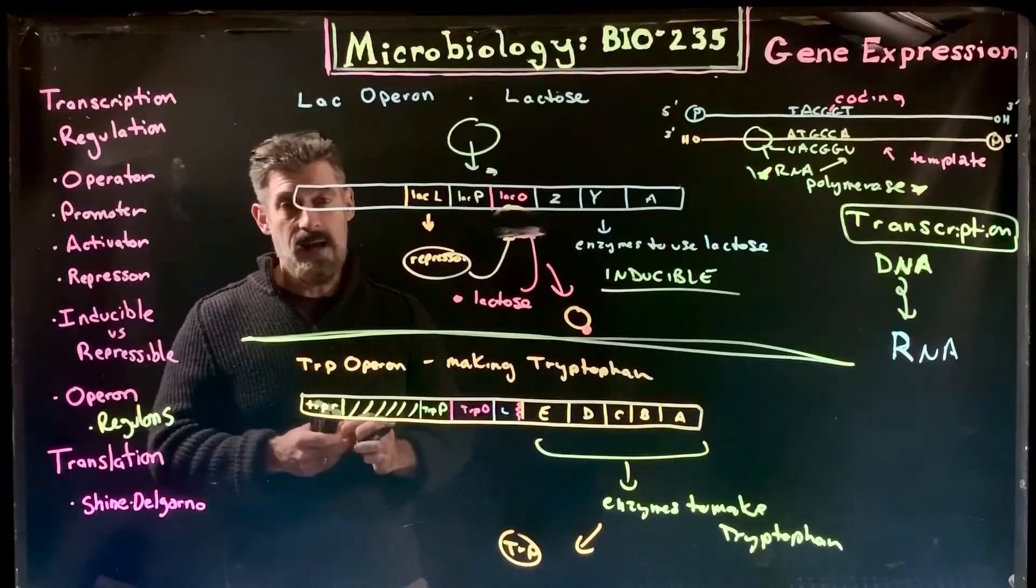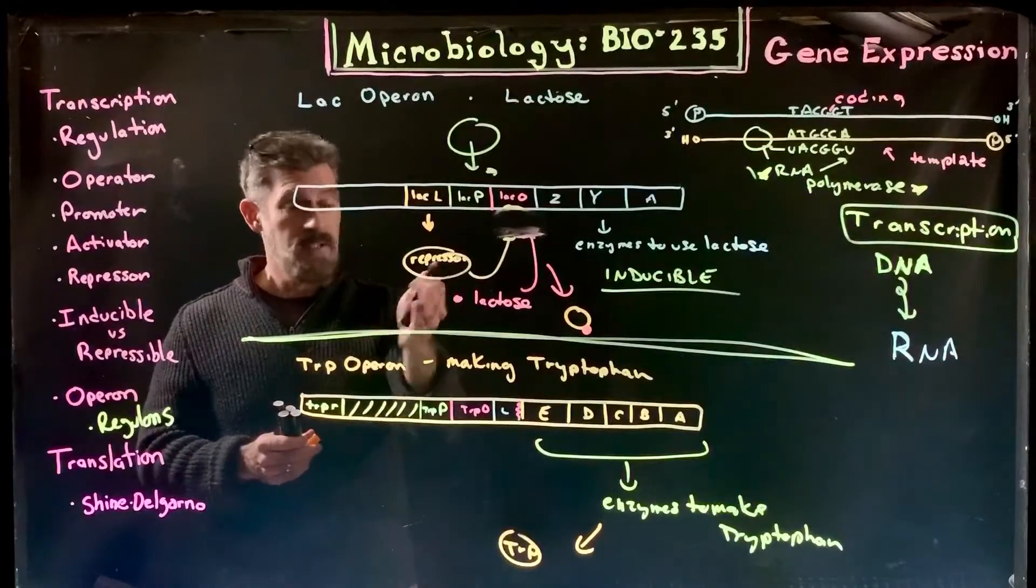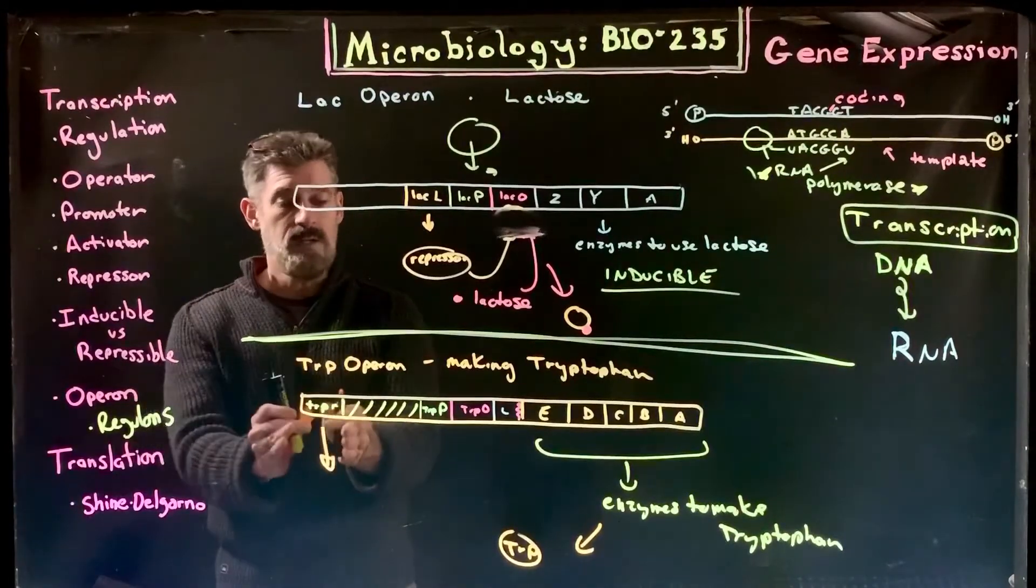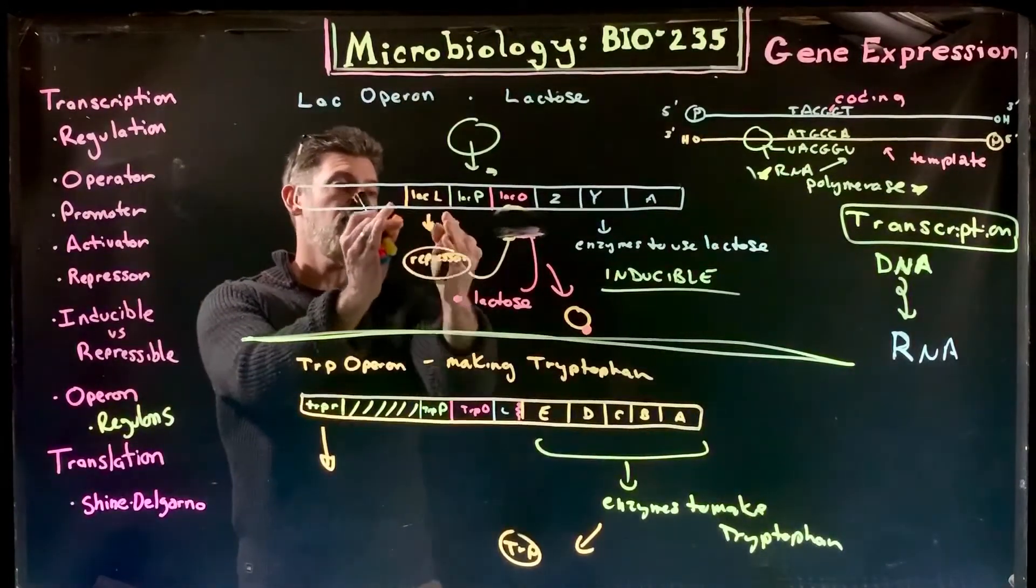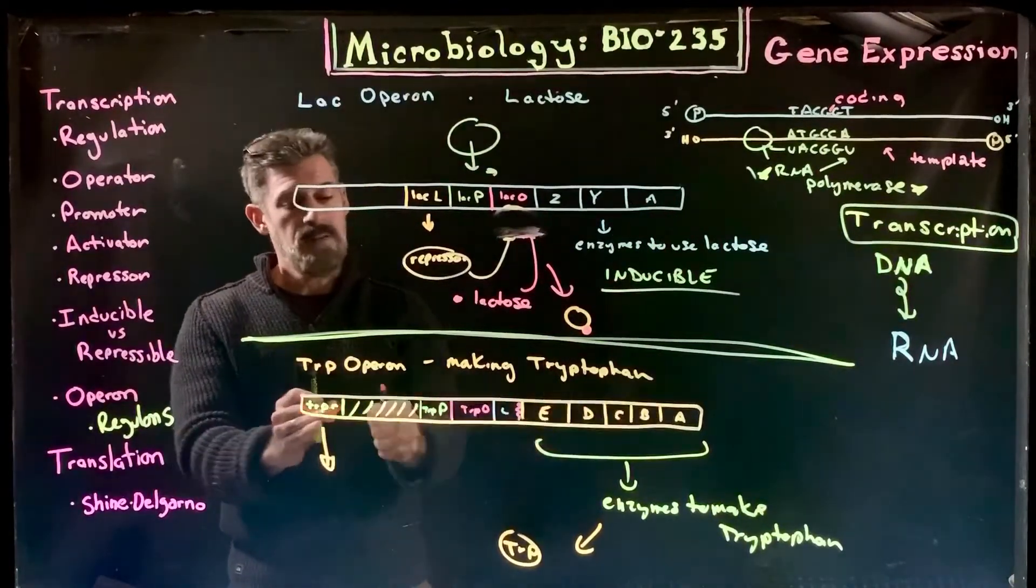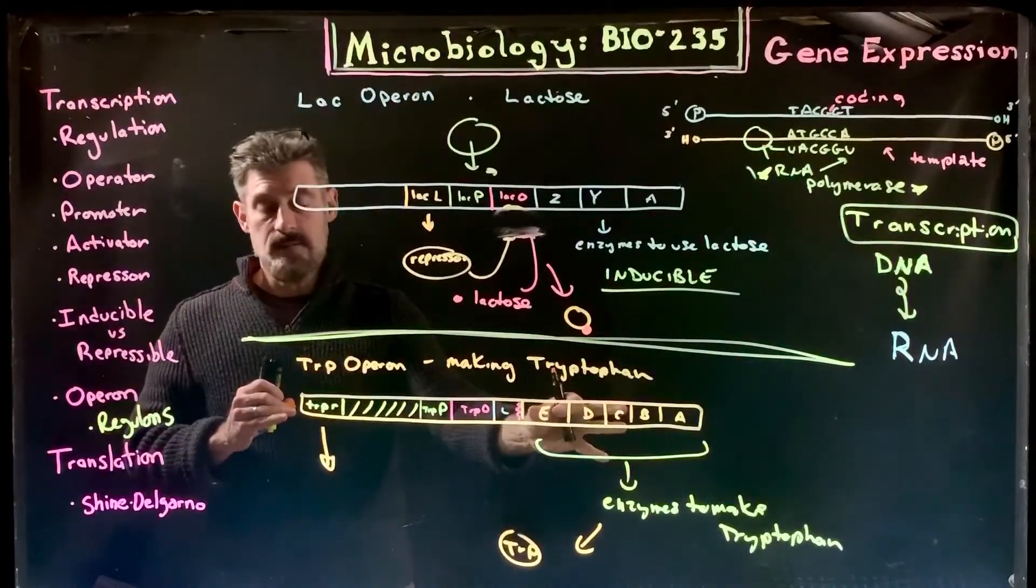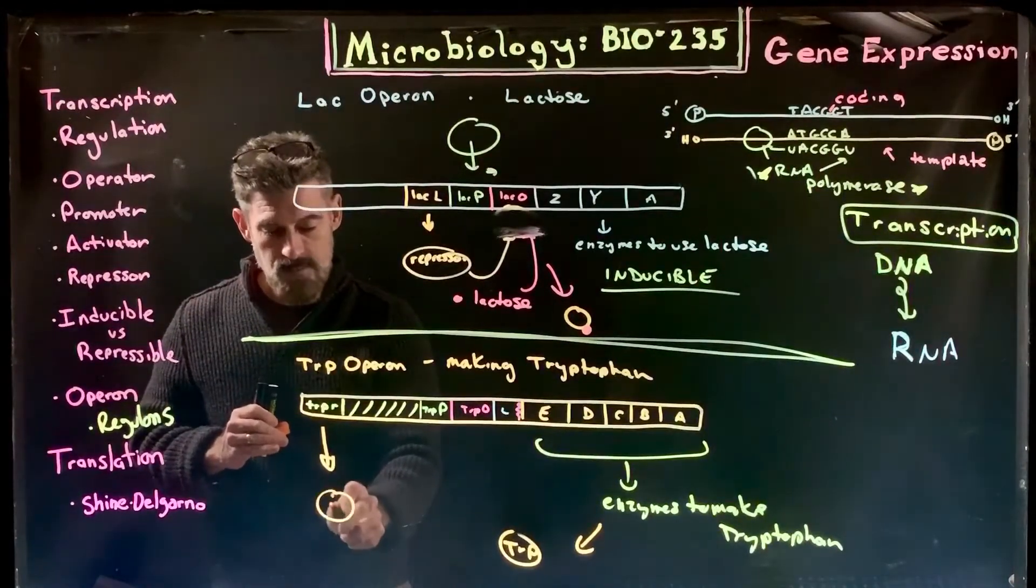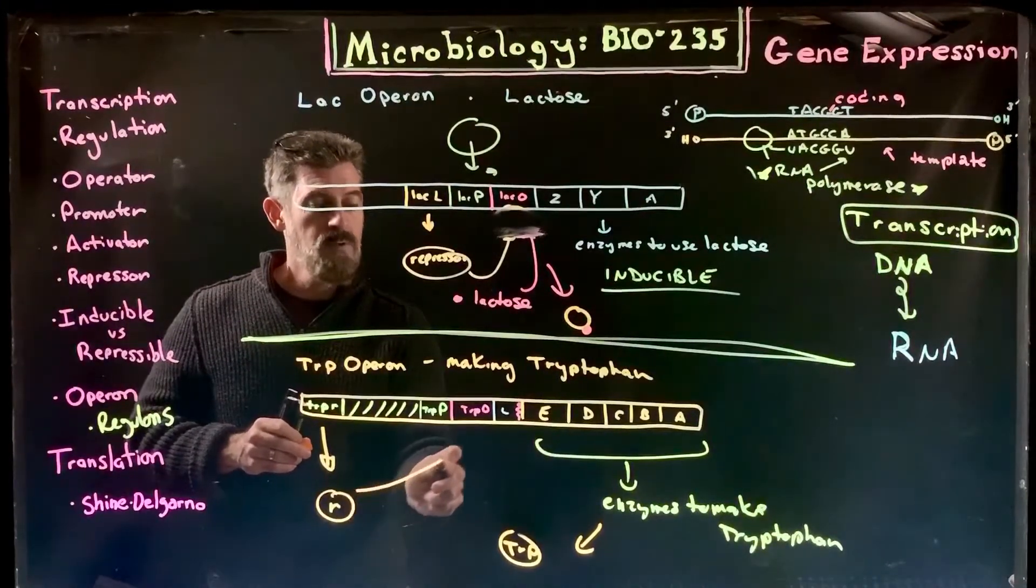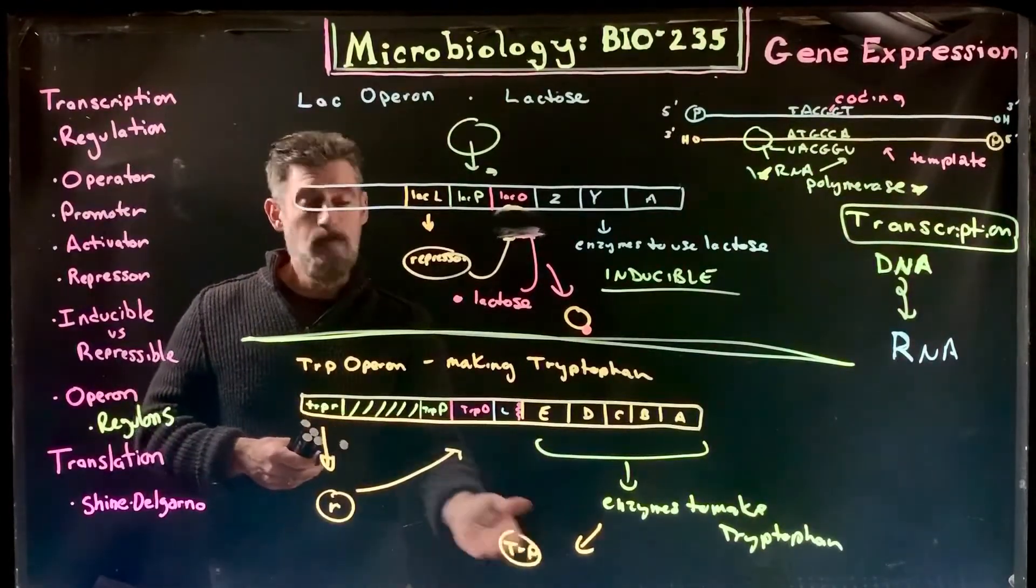However, there are repressor proteins being made all the time as well. This is a gene that's separate—the repressor protein gene is here, unlike the lac operon system. This repressor protein is far away from these sets of genes. The thing is, the repressor protein, which would normally bind to the operator, can't bind without the help of tryptophan.